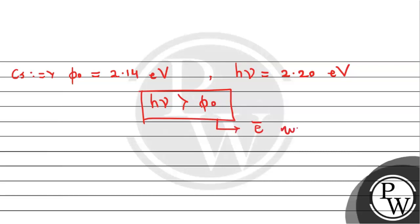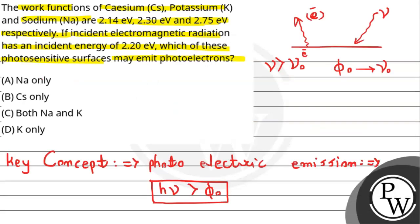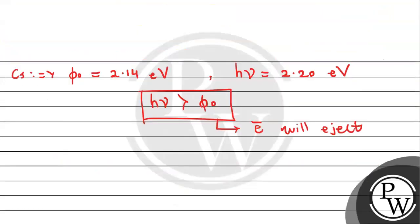Just by seeing, we can see that hν is greater than the work function, and hence therefore electrons will eject. That means cesium may emit photoelectrons. So for cesium, this possibility exists.